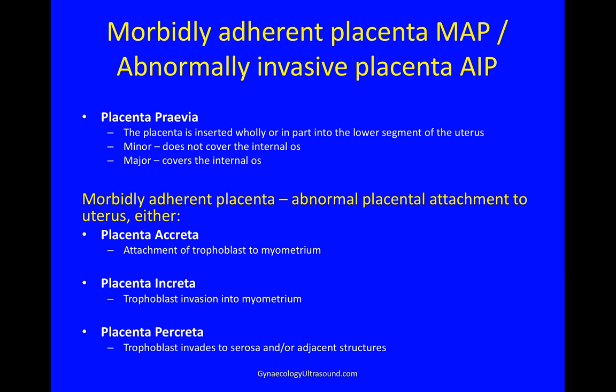A morbidly adherent placenta or abnormally invasive placenta — these are the same thing — is an abnormal placental attachment to the uterus. Either placenta accreta, where the trophoblast is attached to the myometrium; placenta increta, which is deeper, where the trophoblast invades into the myometrium; or placenta percreta, where the trophoblast invades through the myometrium to the serosa and/or the adjacent structures.